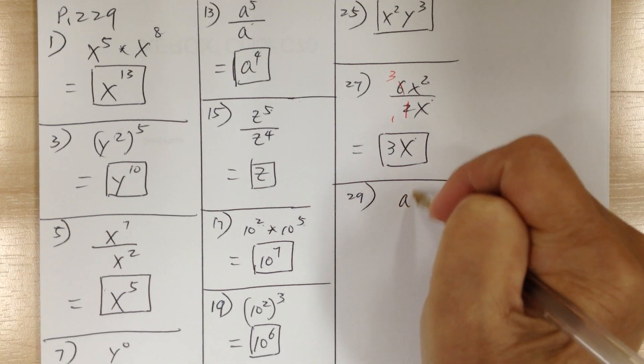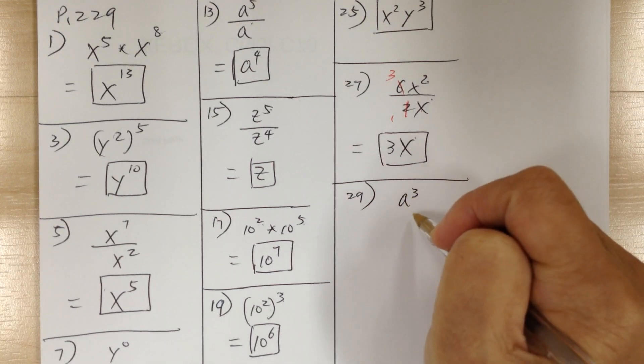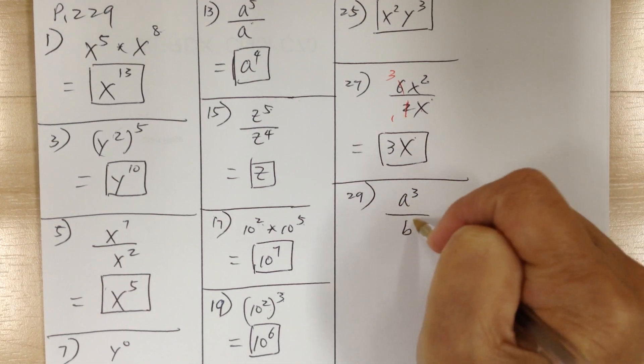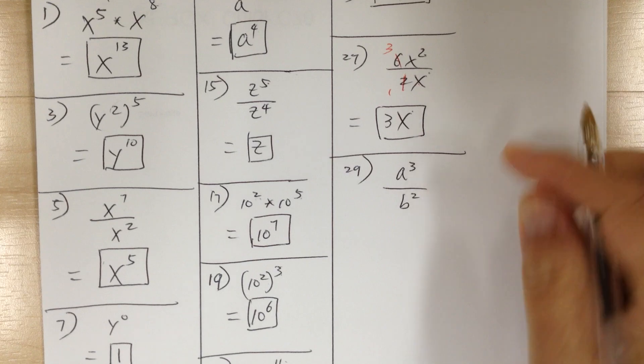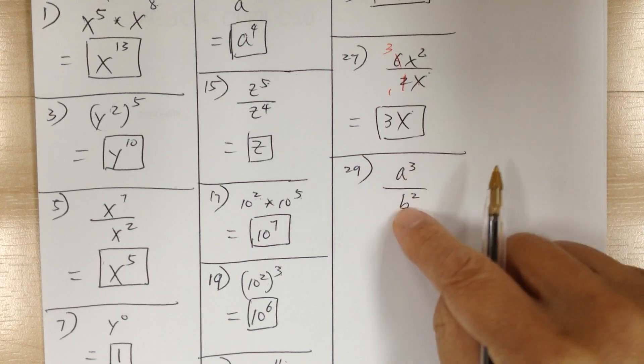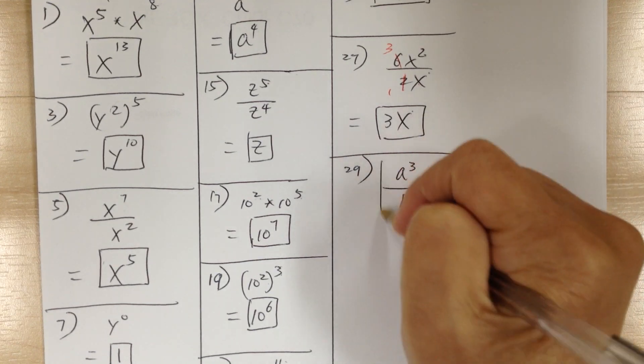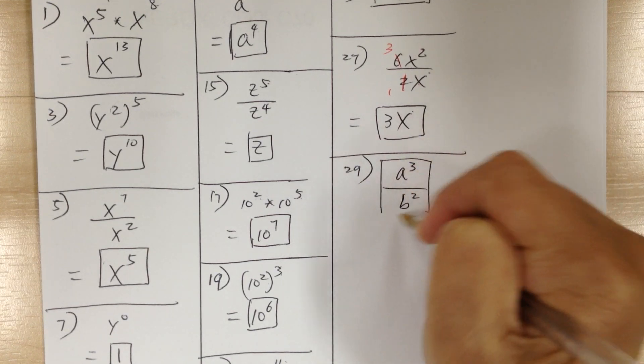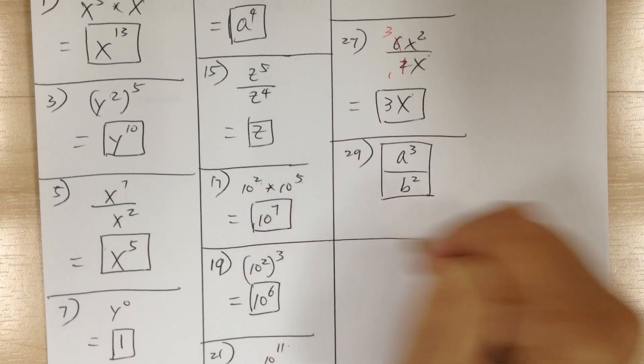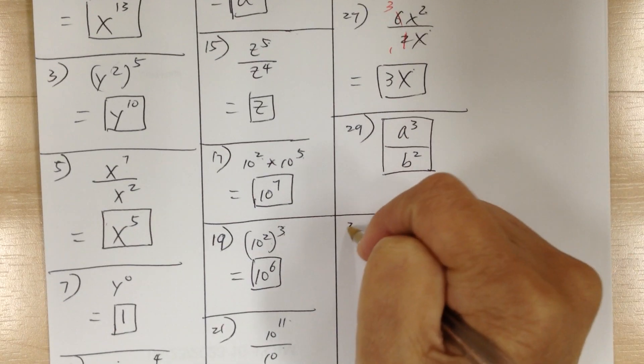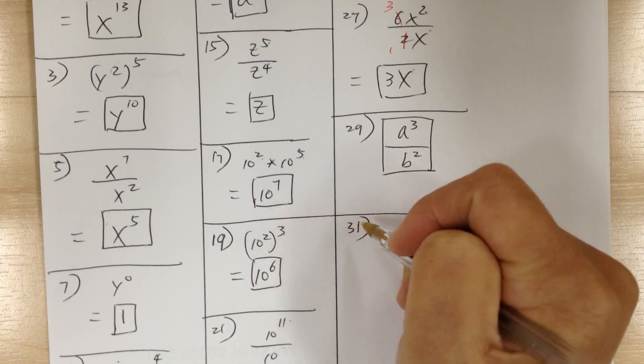You got a to the 3 times b to the 2. The bases are different, so you cannot do anything. So just leave it — nothing can be done on this one.